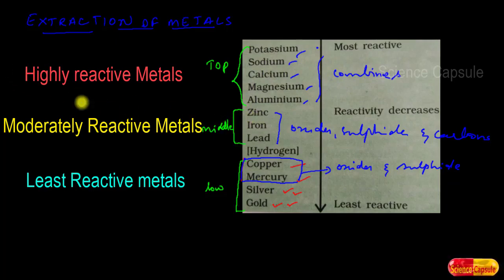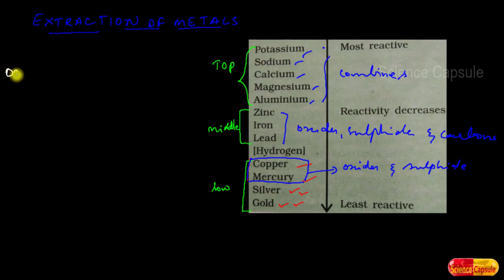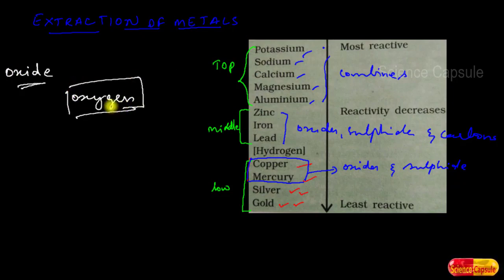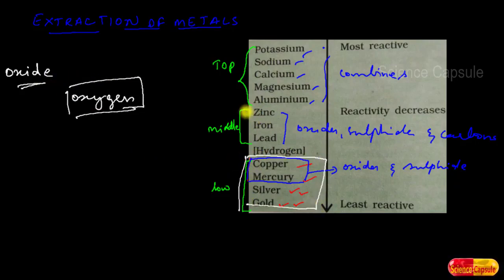Mostly metals are available in the form of oxide ores because oxygen is highly reactive and abundant on the earth, so it combines with almost all metals. Based on reactivity, elements are grouped into three: low, middle, and top in the activity series, and different metallurgical processes are used to extract each group.